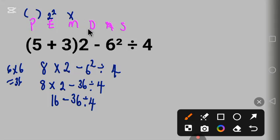According to order of operations, the next one here is division. 16 minus 36 divided by 4. So we'll bring down this 16 minus... 36 divided by 4 will give us 9.